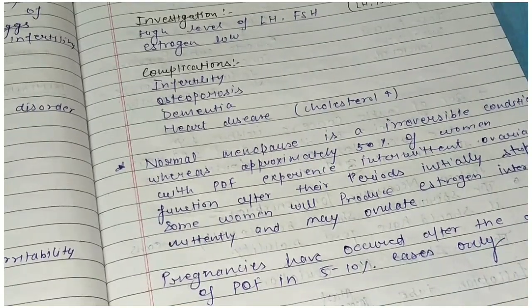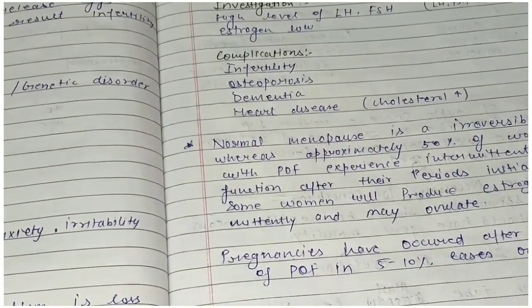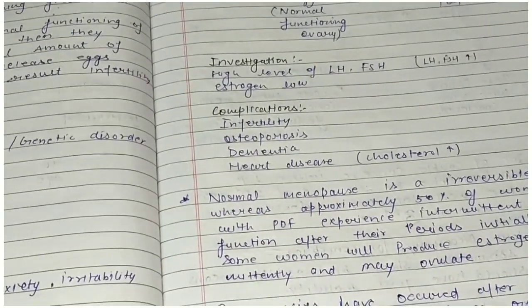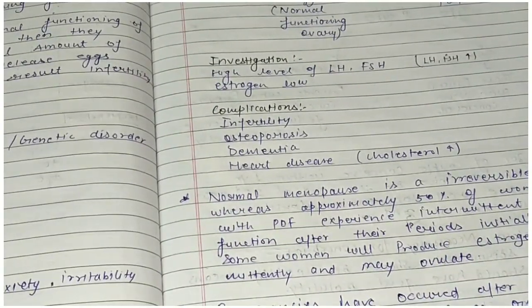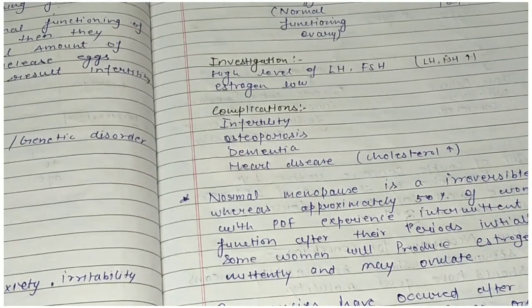Pregnancy has occurred after the diagnosis of POF in 5 to 10% of cases. So if POF is diagnosed, in 5 to 10% of cases pregnancy can still occur, while infertility may also happen.